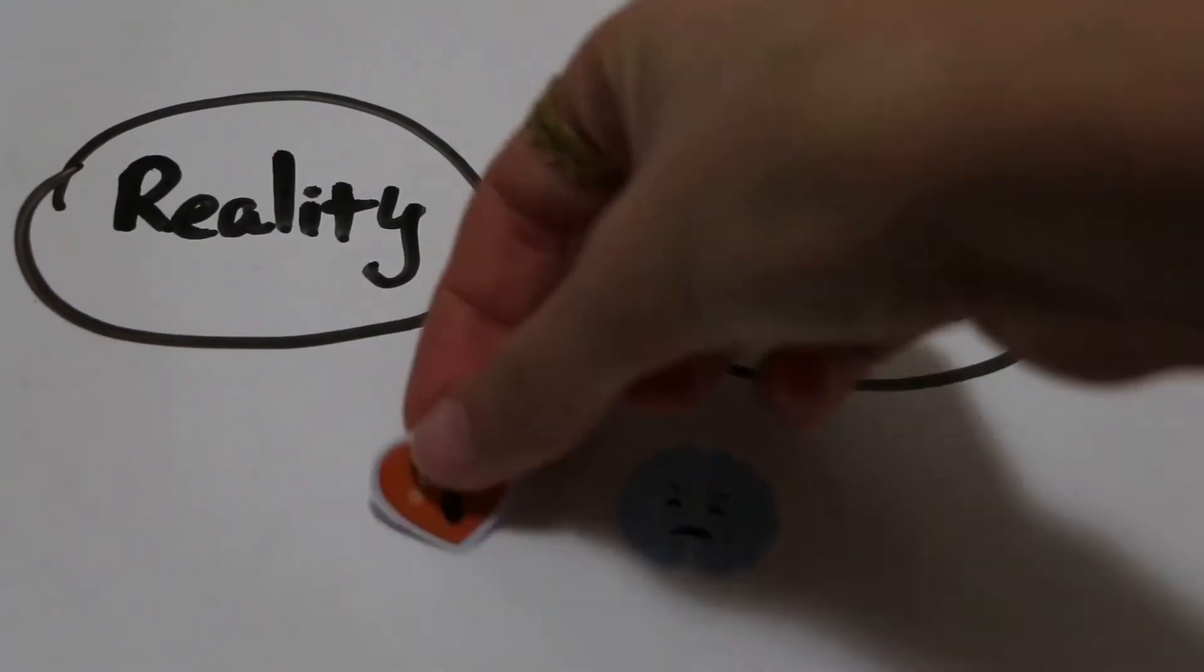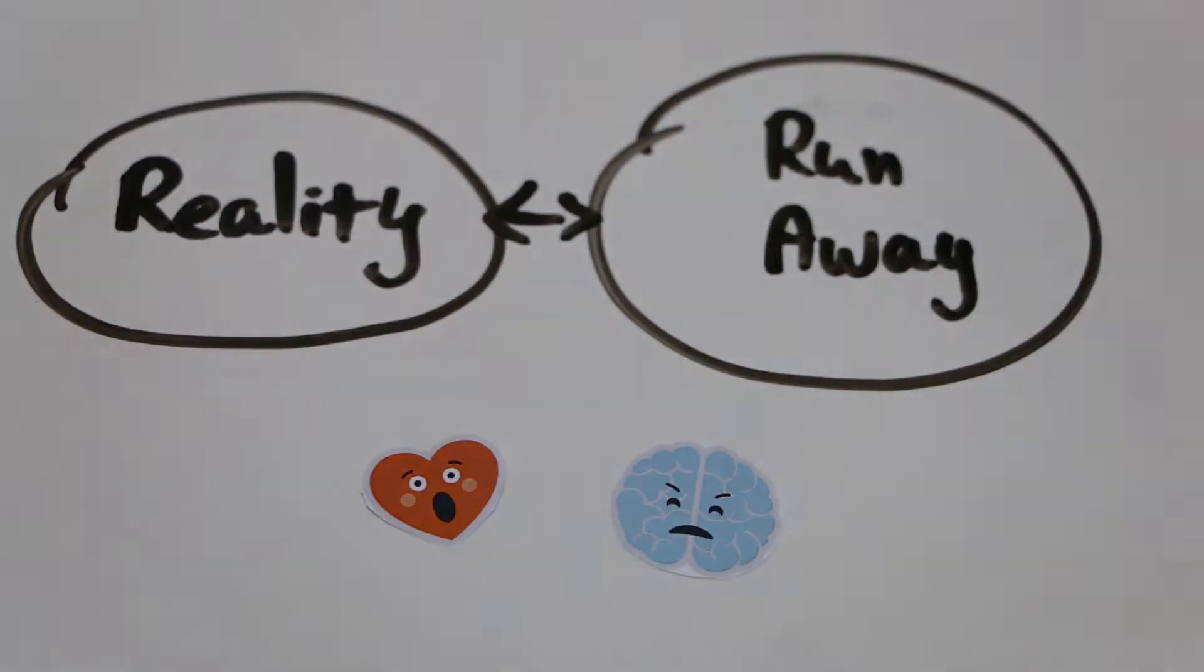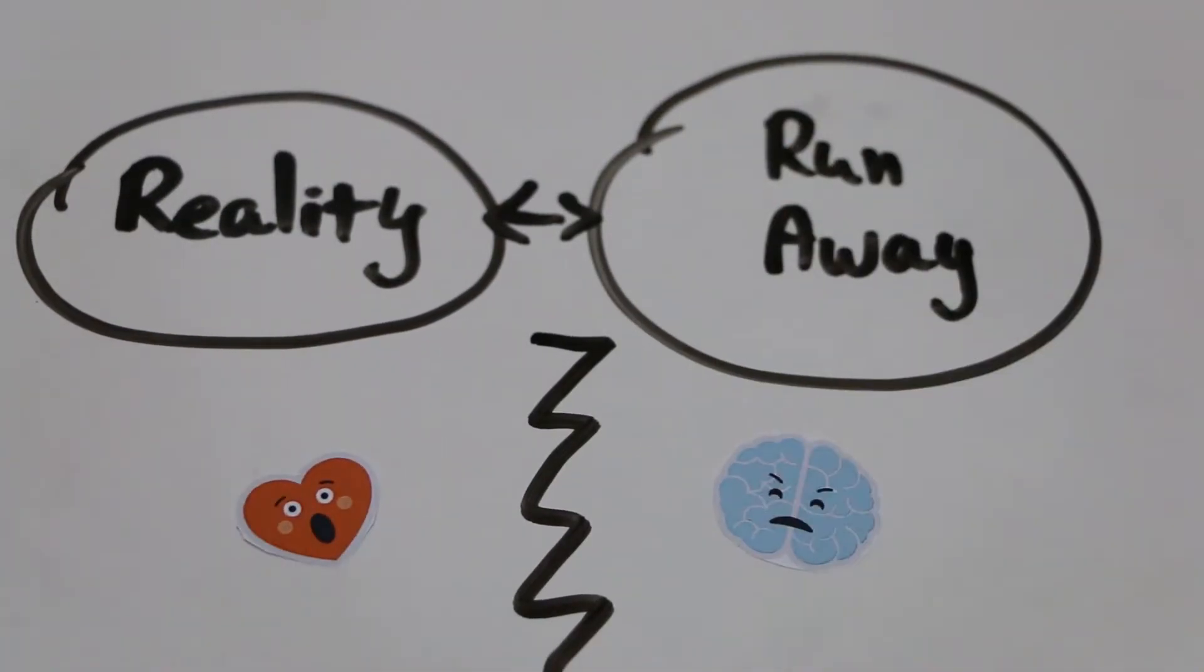The head decided that he can no longer live with the emotion. She is not responsible enough and can only disturb. The head and the emotion got divorced and now live in two different houses.